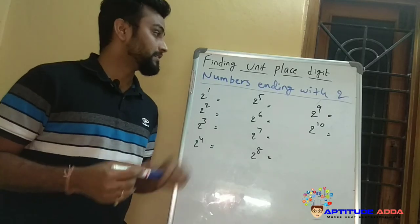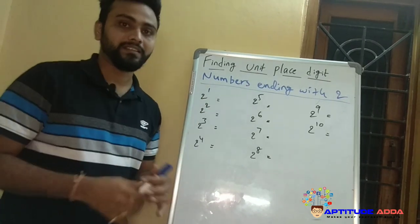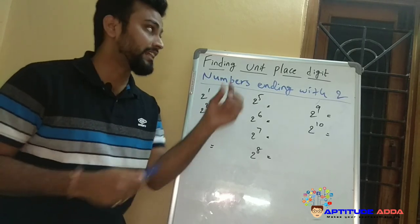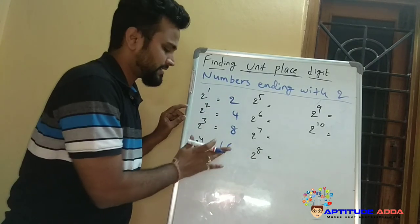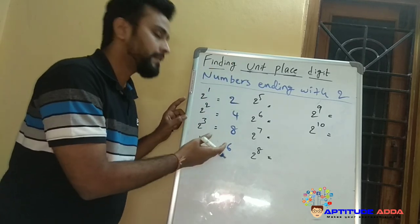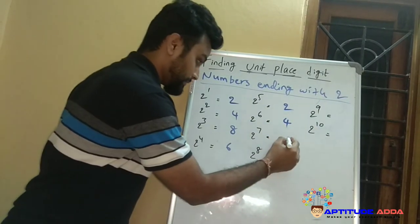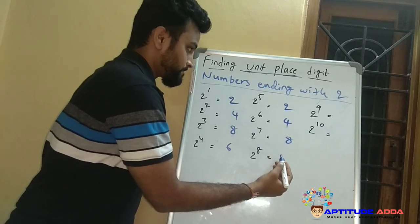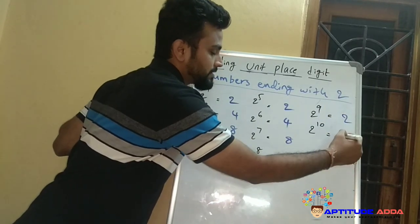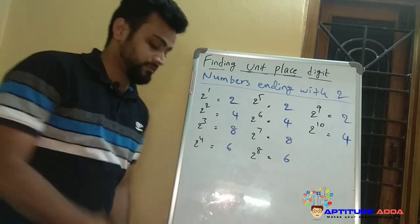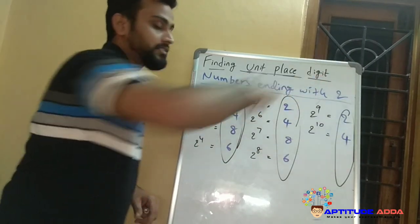First we'll look at numbers ending with 2. I'll write all the powers of 2 from 2^1 to 2^10 — I only need the units place digit. 2^1 = 2, 2^2 = 4, 2^3 = 8, 2^4 = 16 → 6, 2^5 = 32 → 2, 2^6 = 64 → 4, 2^7 = 128 → 8, 2^8 → 6, 2^9 → 2, 2^10 → 4. If you observe this series, the cycle 2, 4, 8, 6 is repeating for every four powers.